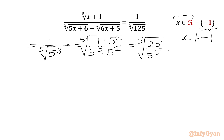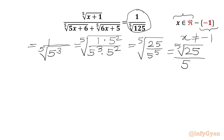Now I will split our radical. So we can write the 5th root of 25 in the numerator, and the denominator will be the 5th root of 5 to the power 5, which is 5. So in the RHS we can write the 5th root of 25 over 5.